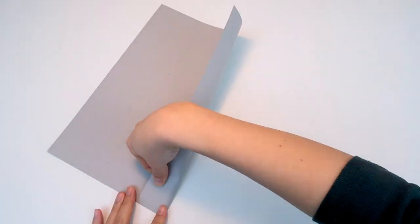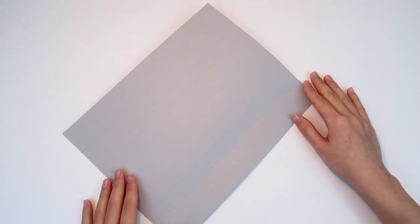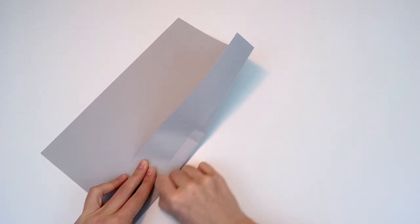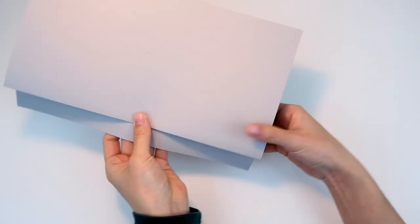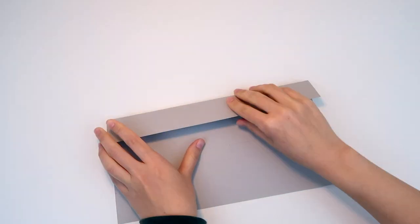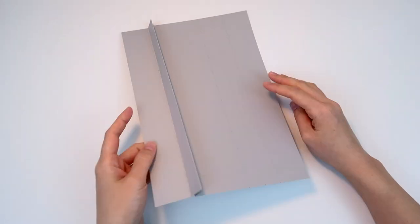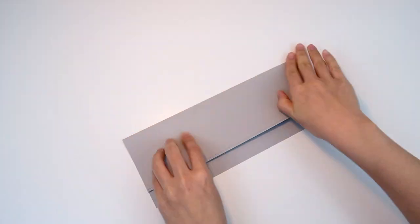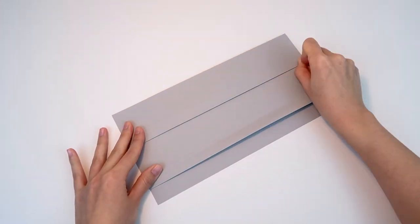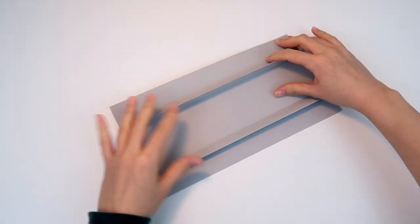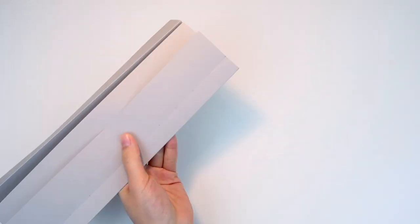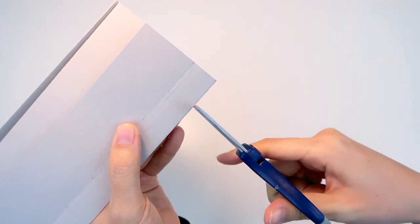Make a fold like this, so that you make a small triangular mountain. Repeat on the other side. Now that you have the two mountains ready, fold and hold onto the paper so that the mountain peak becomes flat.